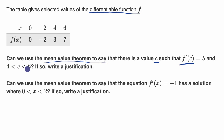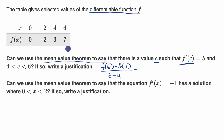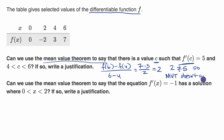Let's figure out the slope of the secant line between (4, f(4)) and (6, f(6)). If it equals five, we could use the mean value theorem; if not, it would not apply. So: f(6) minus f(4), all over six minus four, equals seven minus three over two, which equals two. Since two is not equal to five, the mean value theorem does not apply.